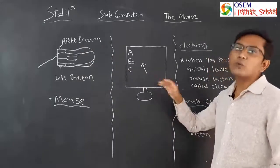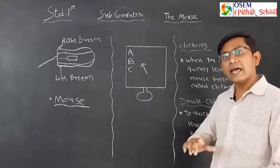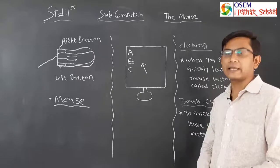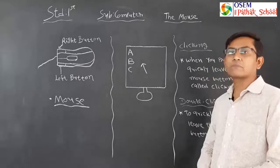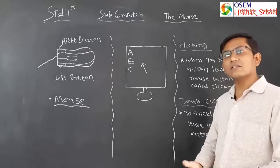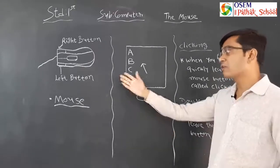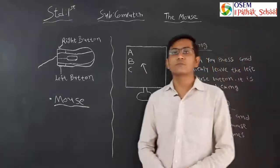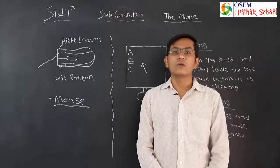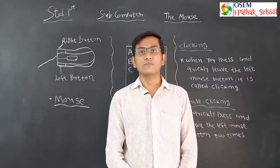When you move the mouse on the mouse pad, the mouse pointer will also move in that direction. These are the movements of the mouse pointer. Now let's look at the other tasks we can perform with the mouse — these are called the actions of the mouse.